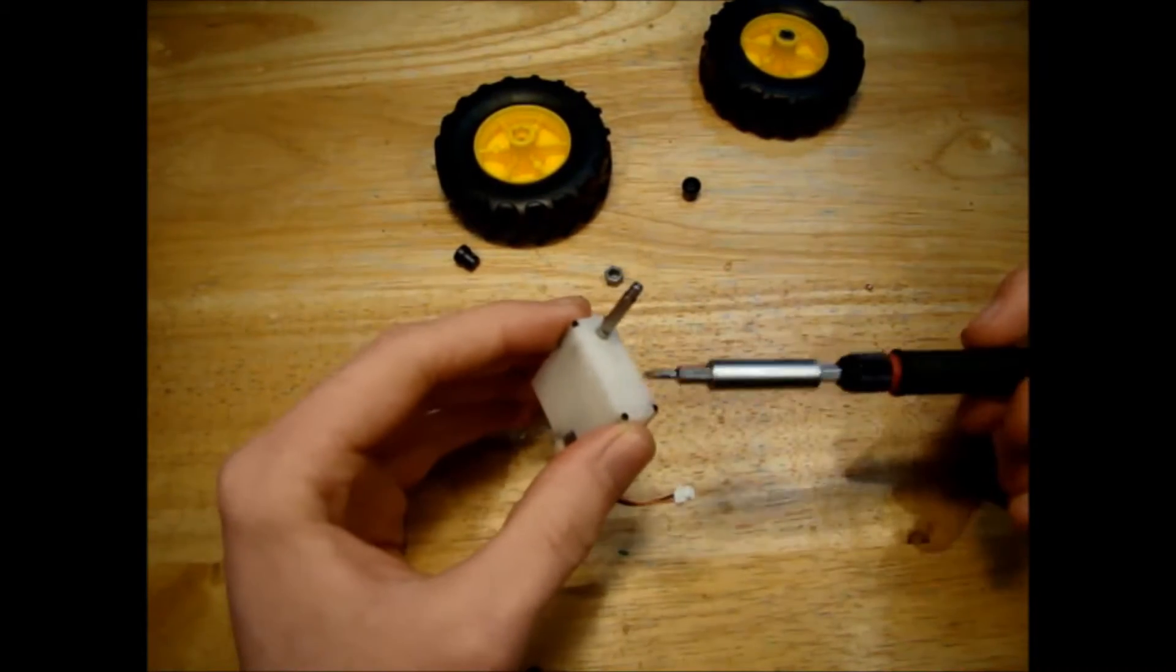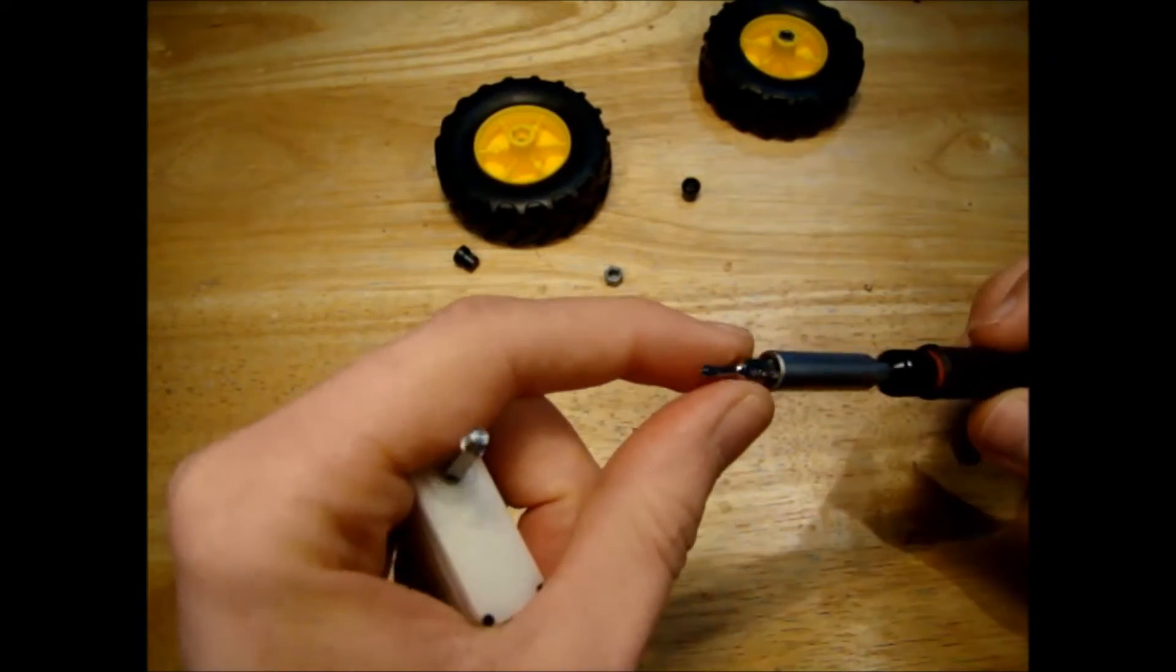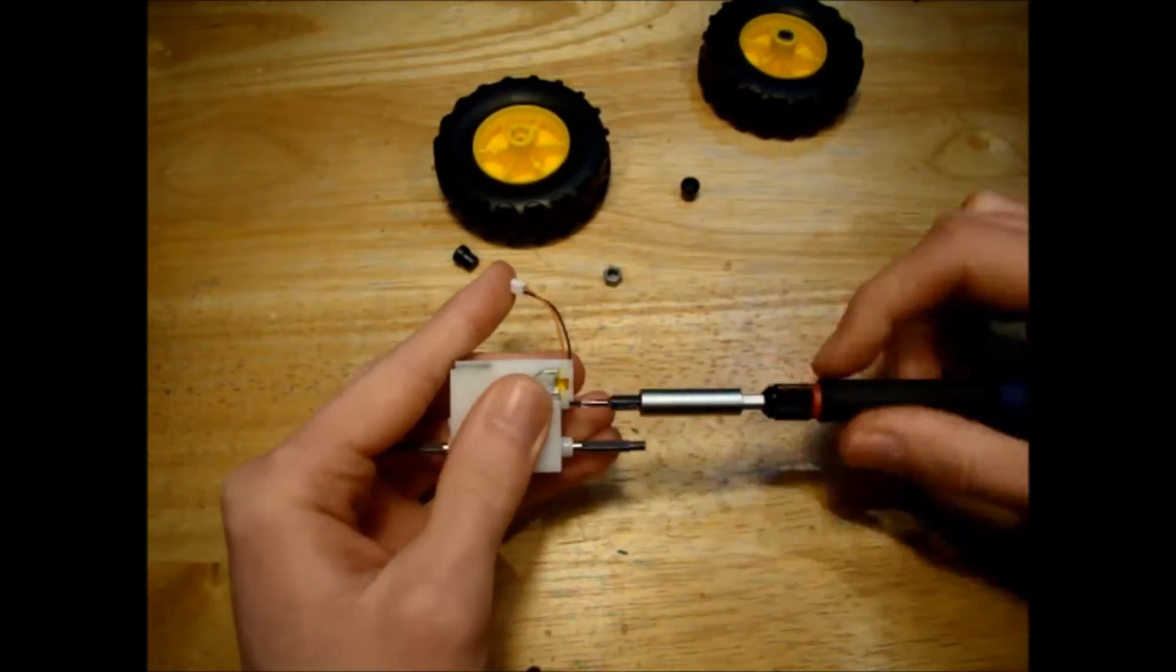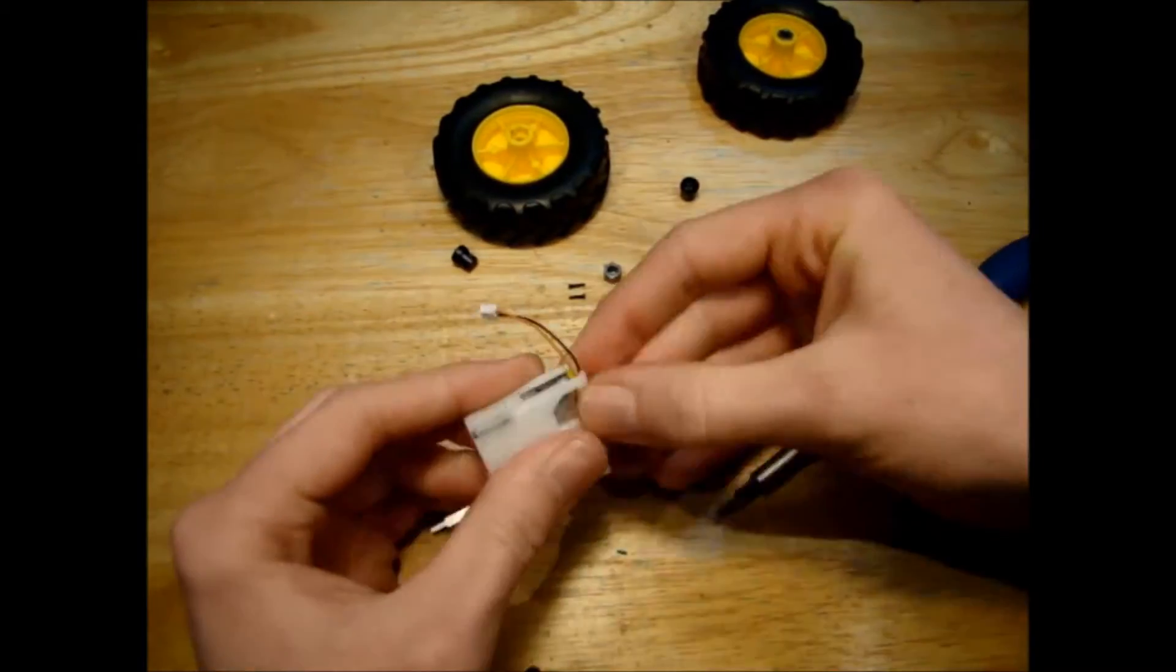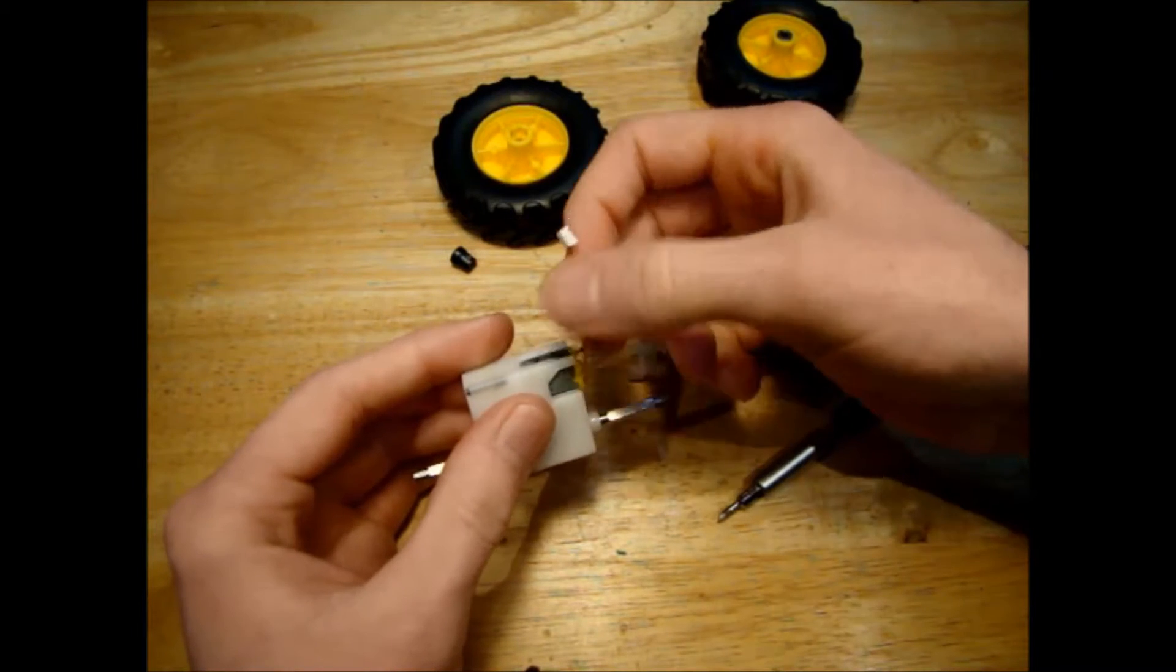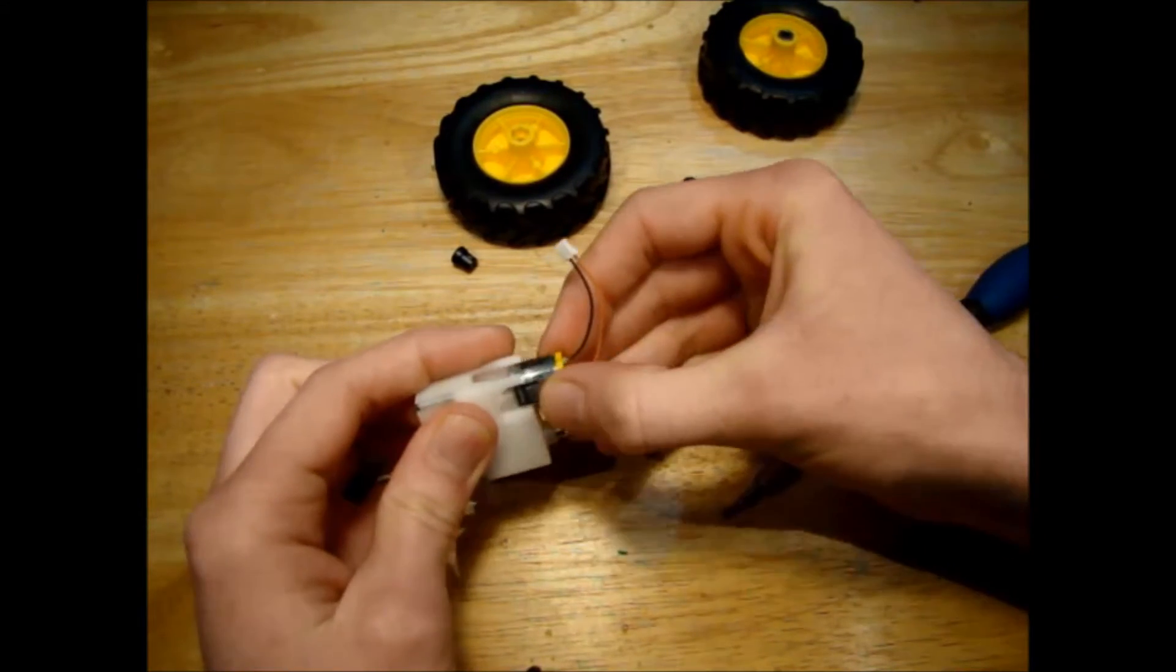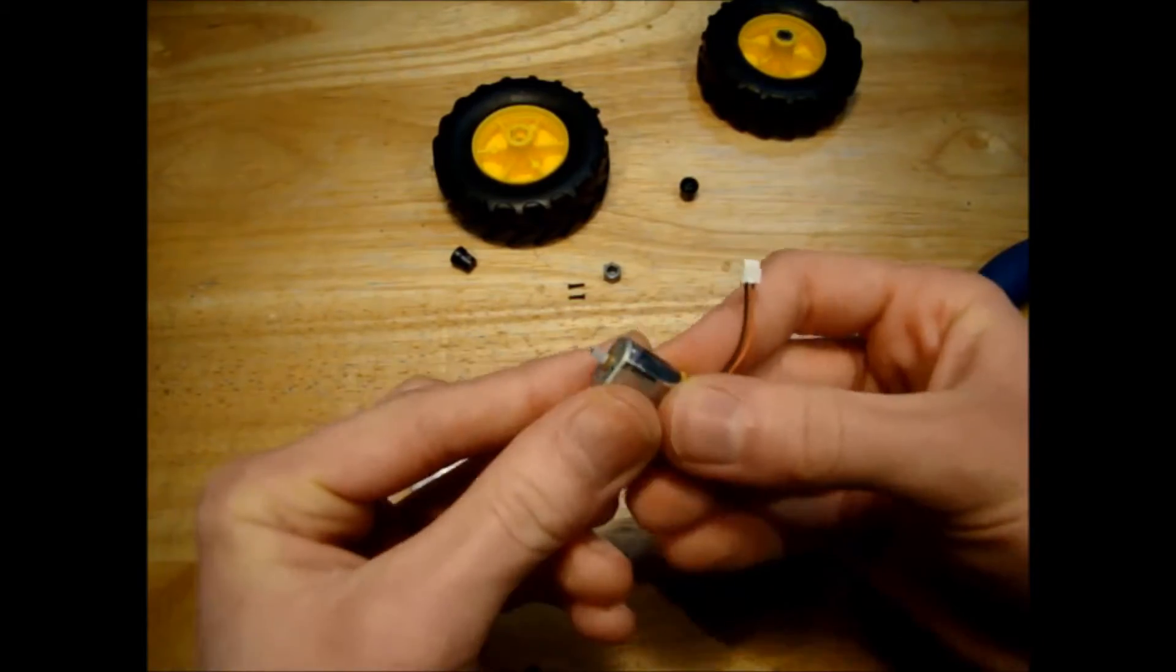The screws holding the motor together are very small Phillips head screws. So, we'll maybe take the motor off first. There's two screws holding the motor on. A bit of plastic just pops off there. We should be able to carefully take our motor out. Straight away, we have plastic gears on this one.